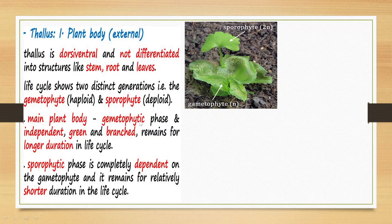The main plant body — the gametophyte phase — is independent, green, and branched. It remains for a longer duration in the life cycle and is more prominently seen in nature. The sporophyte, on the other hand, is totally dependent upon the gametophyte. It does not remain for a very long period of time; once it produces the spores, this part will die out, leaving behind the gametophyte.